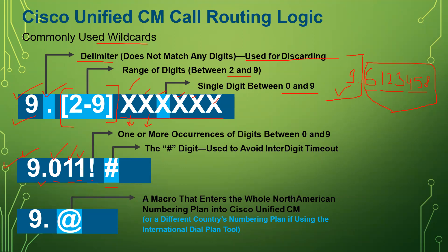Then we have the exclamation mark. What does it mean? This exclamation means one or more occurrences of digits between zero and nine — so any number.